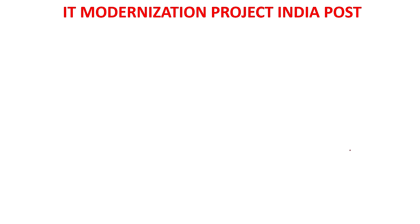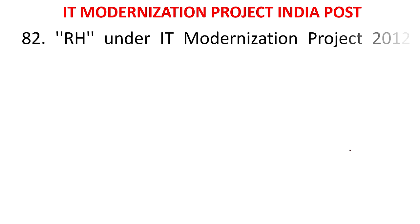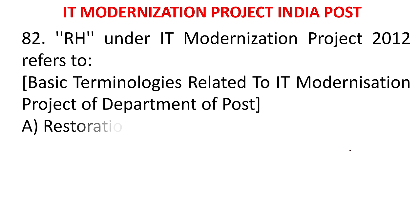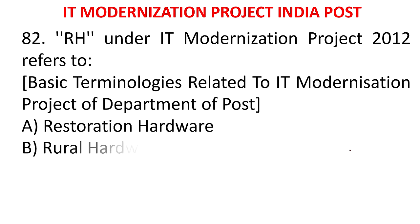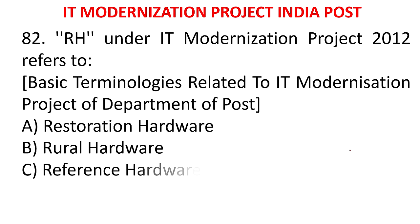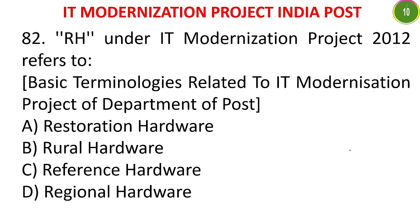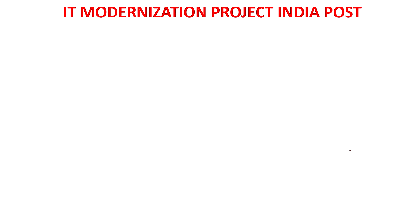MCQ 78: R-H under IT modernization project 2012 refers to - A) Restoration Hardware, B) Rural Hardware, C) Reference Hardware, D) Regional Hardware. The answer is Rural Hardware. R-H means Rural Hardware.